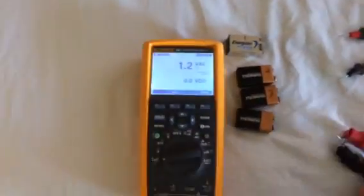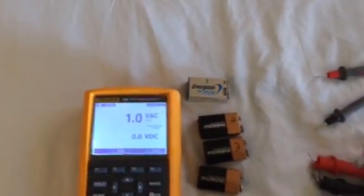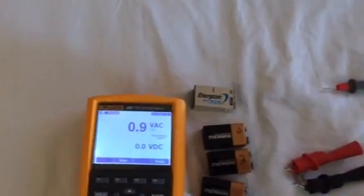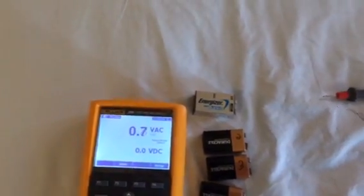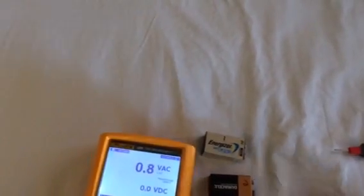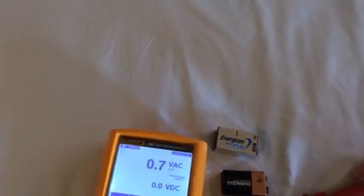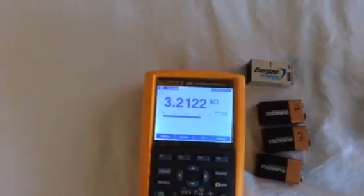But let's say that you don't have a multimeter with a low impedance test. Then you can use a resistor in parallel with your test probes.